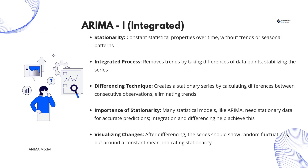Next, we have the integrated component, which deals with stationarity. A stationary time series has constant statistical properties over time, meaning it does not show trends or seasonality. To achieve stationarity, ARIMA applies differencing — a technique that calculates the difference between consecutive data points — which removes trends and stabilizes the series. Many statistical models, including ARIMA, require stationary data for accurate predictions, making this process a crucial step in model preparation.